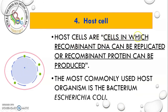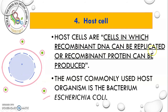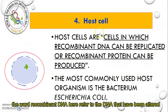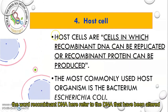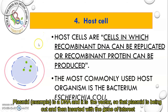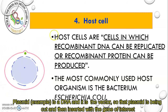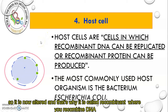The next tool is host cells. Host cells are cells in which recombinant DNA can be replicated or recombinant protein can be produced. The word 'recombinant DNA' here refers to the DNA that has been altered. A plasmid is a DNA and it is a vector — that plasmid is cut and then inserted with the gene of interest, making it altered, which is why it is called recombinant DNA.